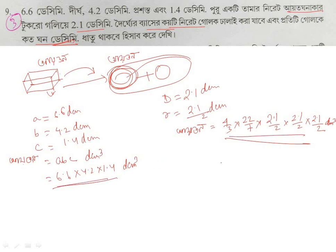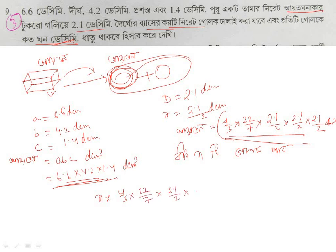Also, the sum of two A can spin them — n into 4.3 into π into r cube equals a. So 6.6 into 4.2 into 1.4 — we will have to put a vector that may be equal to n. The result is equal.